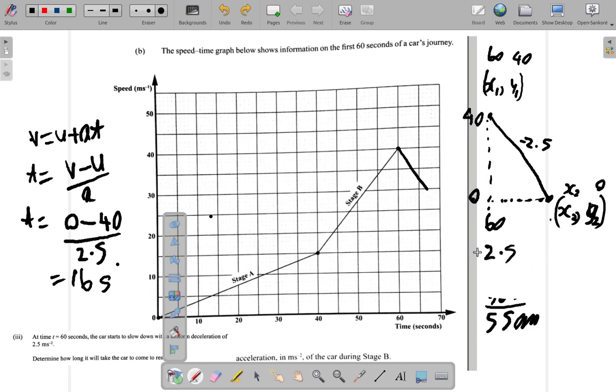So the gradient, negative 2.5 is equal to y2 minus y1, that's y2 minus 40 over x2 minus x1. So that's y2 minus, oh I know y2 is 0, y2 minus y1, y2 is 0 minus 40 over x2, I don't know what x2 is, so I just write x2 minus x1, 60, and I'm going to calculate and find out what is x2.